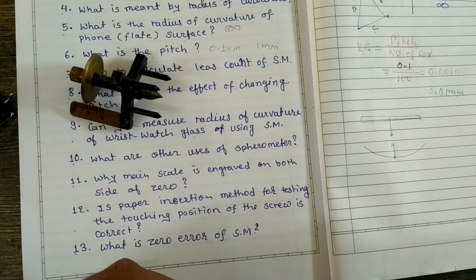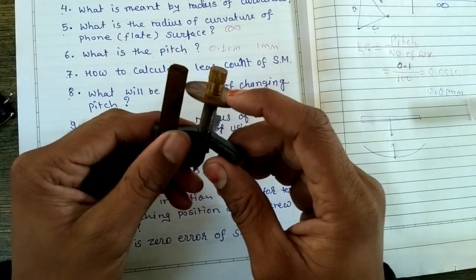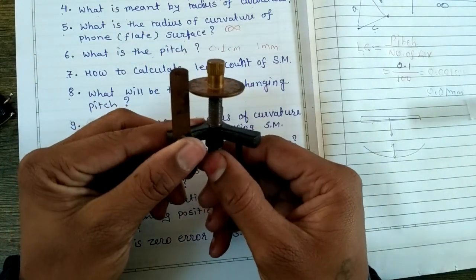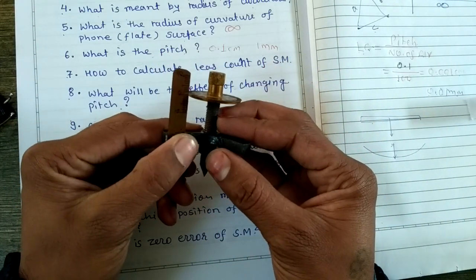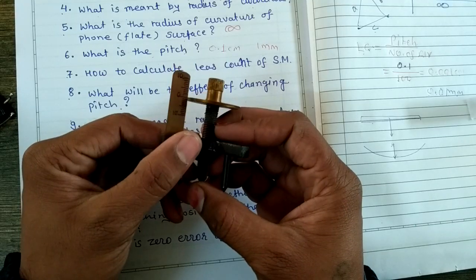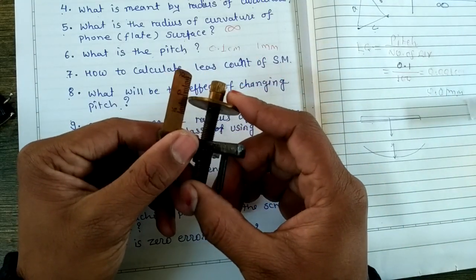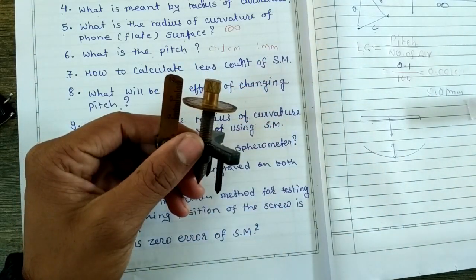What is the zero error of spherometer? Sometimes we take a reference reading, so there is no need of zero error, but in some cases we need to determine the zero error. Thank you very much.